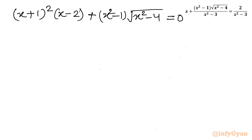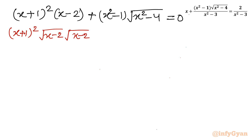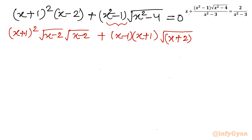Now I'll split the terms. (x+1)² is written as (x+1)(x+1), and (x-2) is split into √(x-2)·√(x-2). For (x²-1) I apply difference of squares to get (x+1)(x-1), and √(x²-4) is written as √(x+2)·√(x-2). Right-hand side is 0.